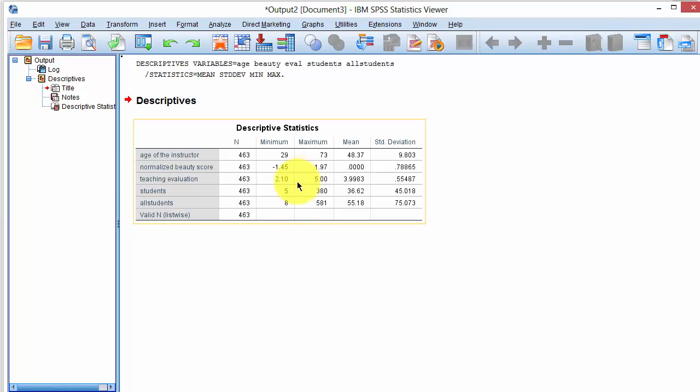So we click on OK. And we have the same variables computed with the number of observations, minimum, maximum, mean, and standard deviation.